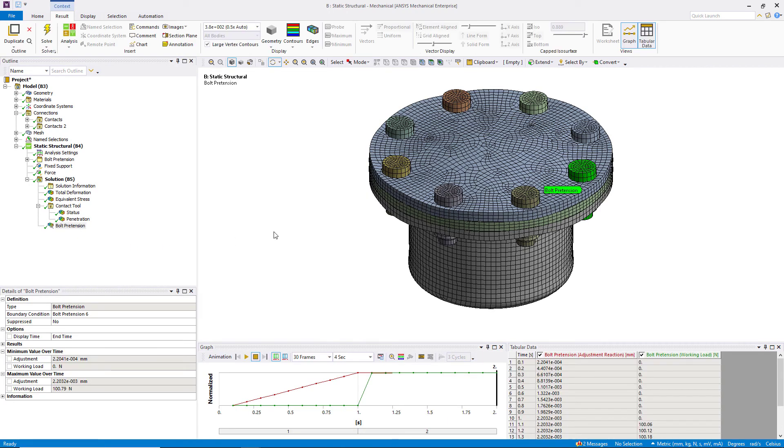If we notice that the penetration is too high, then we can increase the contact stiffness under the contact details. Increasing the contact stiffness will reduce the penetration and therefore makes the simulation more accurate. Another way of fixing this issue is by refining the mesh in those contact regions. This indirectly increases the contact stiffness and also makes the results more accurate in that region.